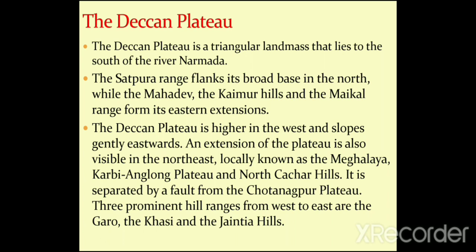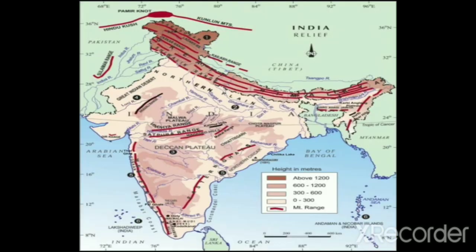The north-eastern extension is locally named the Karbi Anglong Plateau and North Cachar Hills. It is separated from the Chhotanagpur Plateau by a fault. Three prominent hill ranges from west to east are the Garo, Khasi, and Jaintia hills.